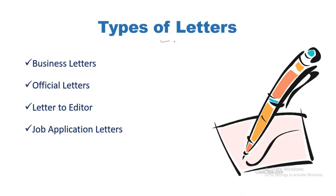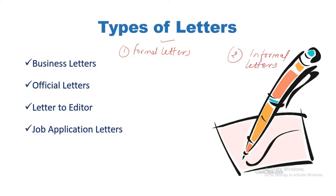First of all, let's know about the types of letters. Generally, there are two types: first is formal letters, and second is informal letters. Informal letters are the ones we write to our friends, families, and known acquaintances. Formal letters include four types: business letters, official letters, letter to the editor, and job application letters.